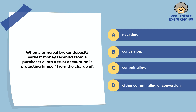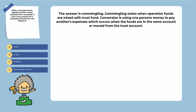When a principal broker deposits earnest money received from a purchaser into a trust account, he is protecting himself from the charge of: novation, conversion, commingling, or either commingling or conversion. The answer is commingling. Commingling exists when operation funds are mixed with trust account funds. Conversion is using one person's money to pay another's expenses, which occurs when the funds are in the same account or moved from the trust account.